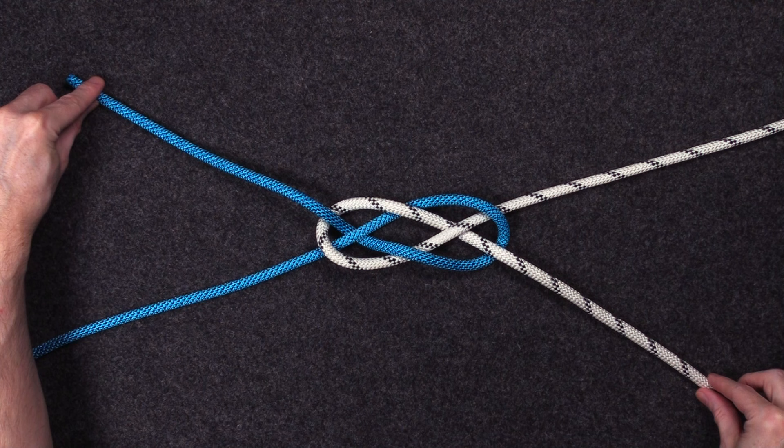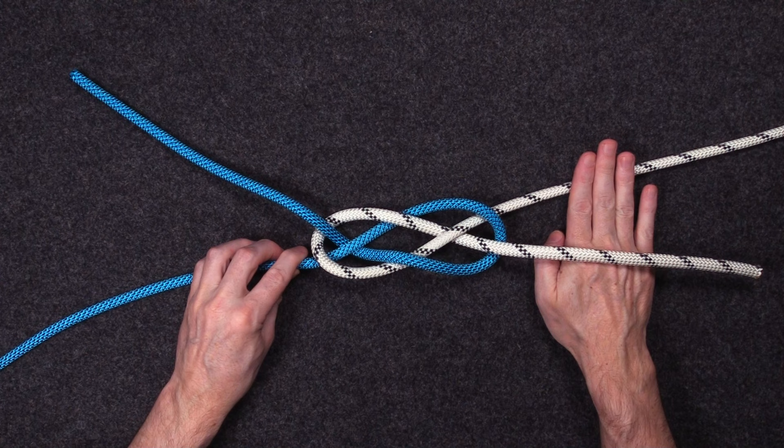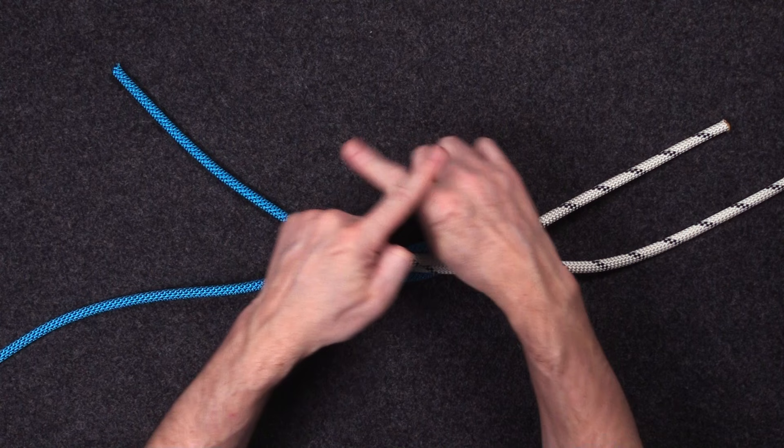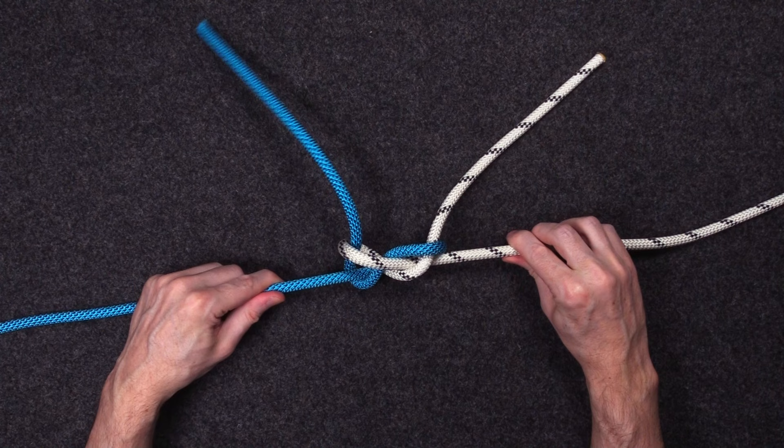So I'm going to grab the standing parts now and I'm going to roll the knot onto its side so you can see the working parts cross over as I tighten. They start to scissor across and now flip over. So they are now on opposite sides to where they started.